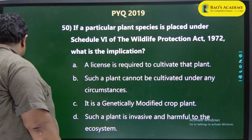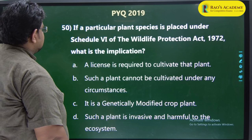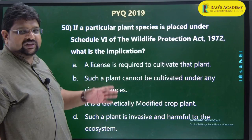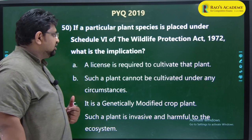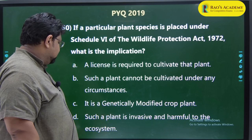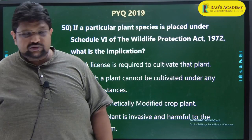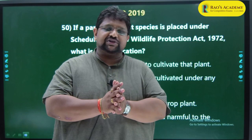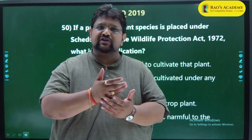Another question - 2019: 'If a particular plant species is placed under Schedule 6 of the Wildlife Protection Act 1972, what is the implication?' Options: a license is required to cultivate that plant; such plant cannot be cultivated under any circumstances; genetically modified crop; invasive and harmful to ecosystem. The answer is A - you need a license from the Chief Wildlife Warden. If you analyze previous year questions like this and know the overall view, multiple topics repeat across most subjects.